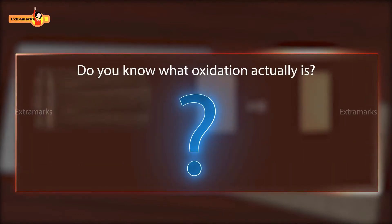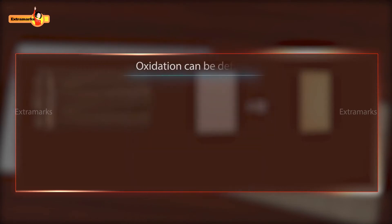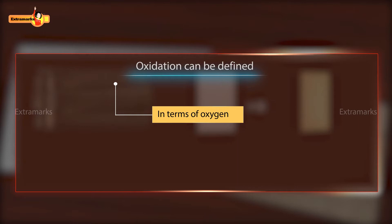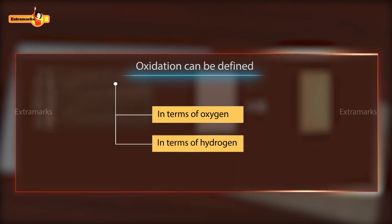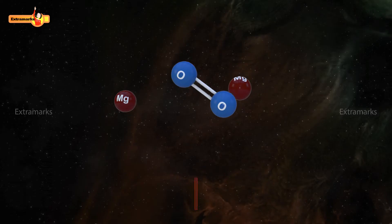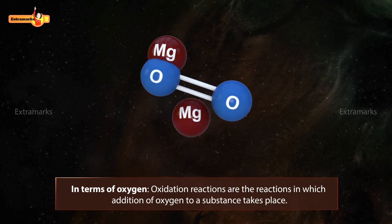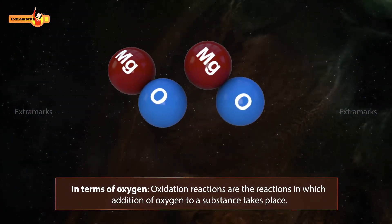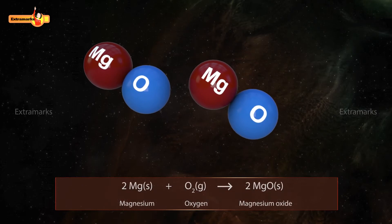Do you know what oxidation actually is? Oxidation can be defined in terms of oxygen, in terms of hydrogen, and in terms of electrons. Let's explore them one by one. In terms of oxygen, oxidation reactions are the reactions in which addition of oxygen to a substance takes place.